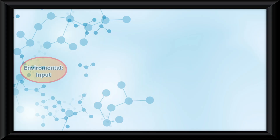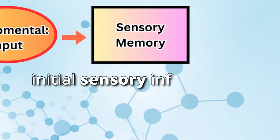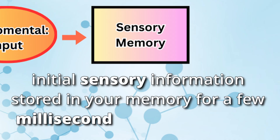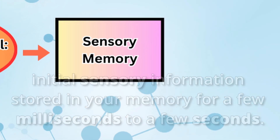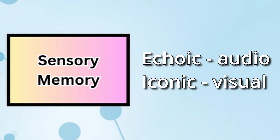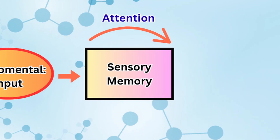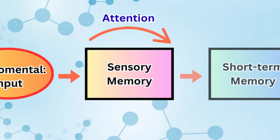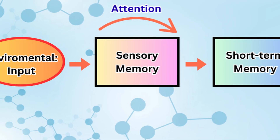So let me explain the basic idea here. Say something happens in front of you. Your sensory memory is the initial sensory information stored in your memory for a few milliseconds to a few seconds. This sensory memory will include the echoic memory for audio senses and the iconic memory for visual senses. Now if you were to pay attention to any of these senses, that is when the information goes into the short-term memory. The senses that don't get any attention are forgotten.